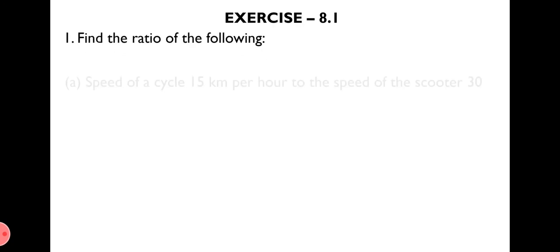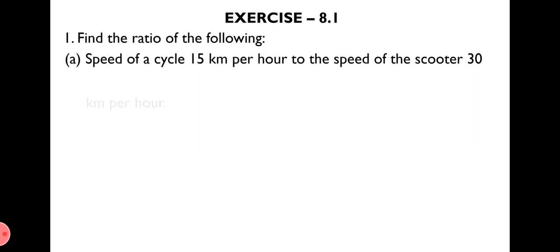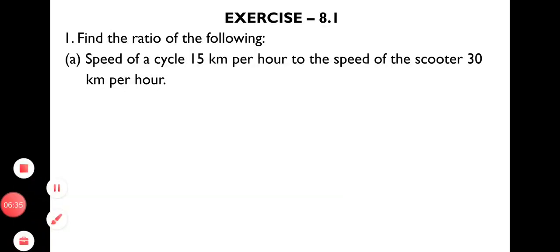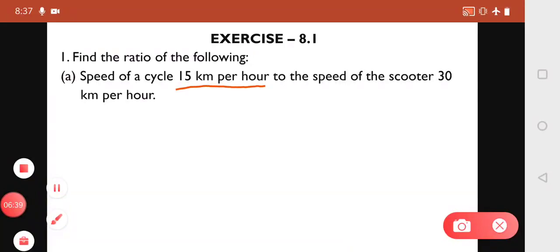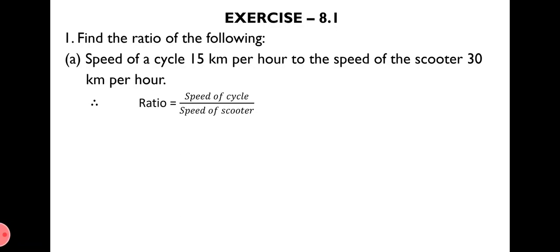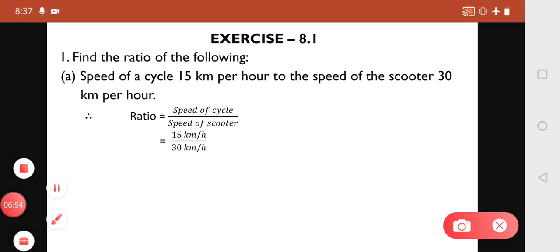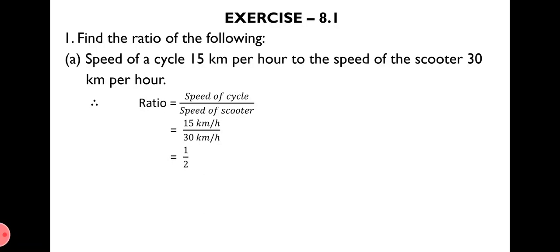Now let's solve Exercise 8.1, Question 1: Find the ratio of the following. Part A: Speed of a cycle 15 km/hr to the speed of a scooter 30 km/hr. Both numbers have the same unit, km/hr, so ratio = 15 km/hr ÷ 30 km/hr = 1/2, that is 1:2. Remember, ratio does not have any unit.